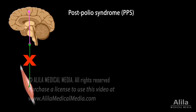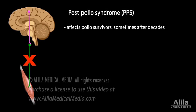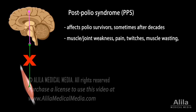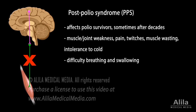Post-polio syndrome, PPS, is a condition that affects polio survivors, sometimes decades after the initial illness. Symptoms include muscle and joint weakness and pain, twitches, muscle wasting, and intolerance to cold. Some patients may also have difficulty breathing and swallowing. PPS is usually not fatal. There is no cure for motor neuron disease, but supportive treatments can relieve symptoms and may help maintain quality of life.